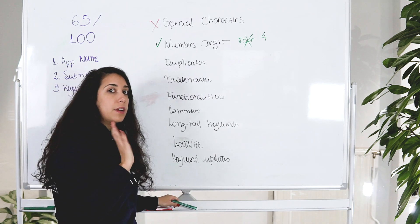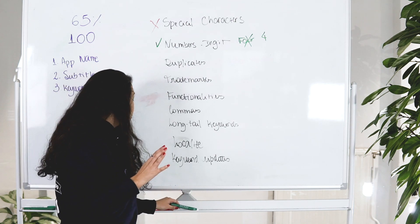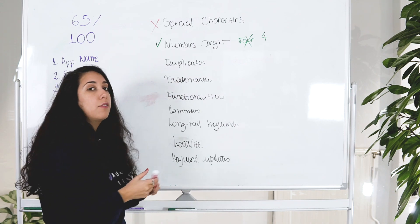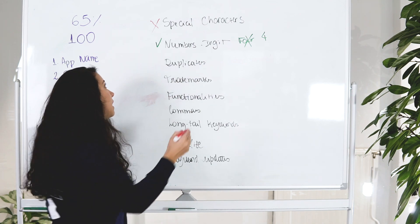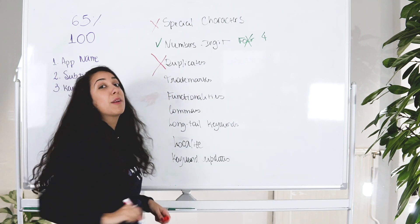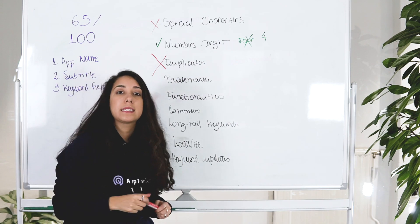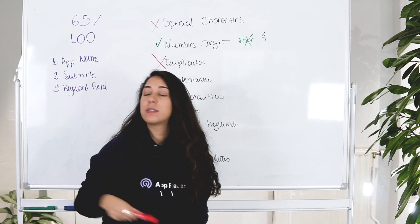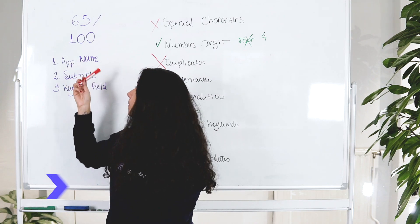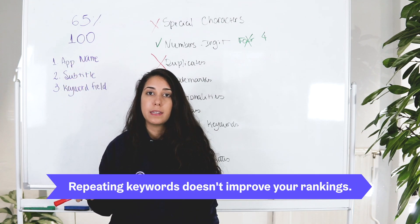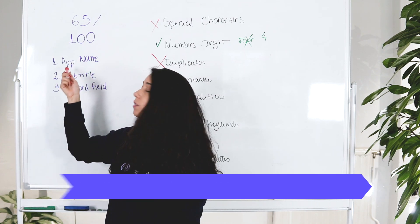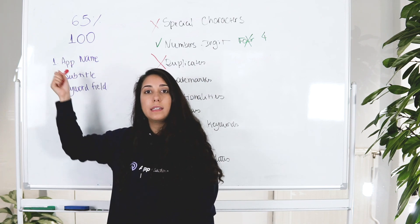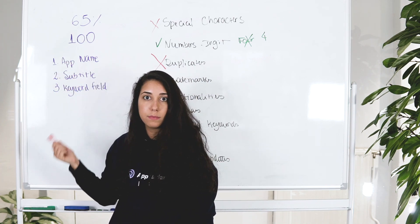Duplicates — this is a big thing, very different from Google Play. For iOS, avoid duplicates. It's a big no. You're not going to rank more because you repeat keywords in the app name, subtitle, and keyword field — you're just burning space. Never repeat: if you use a keyword in the app name, don't repeat it in the subtitle or keyword field, and vice versa.